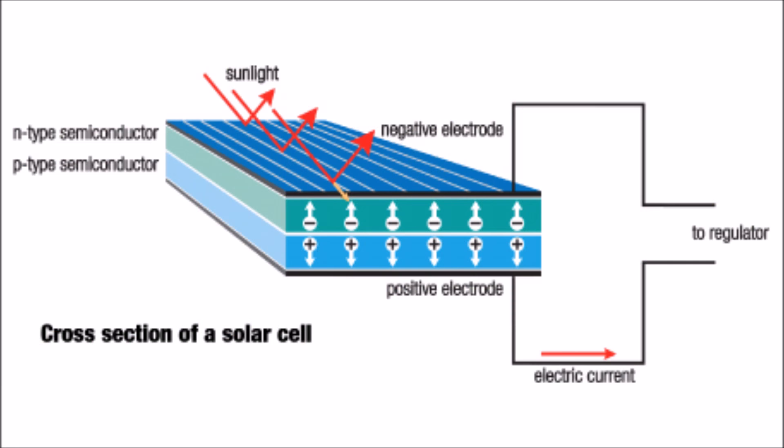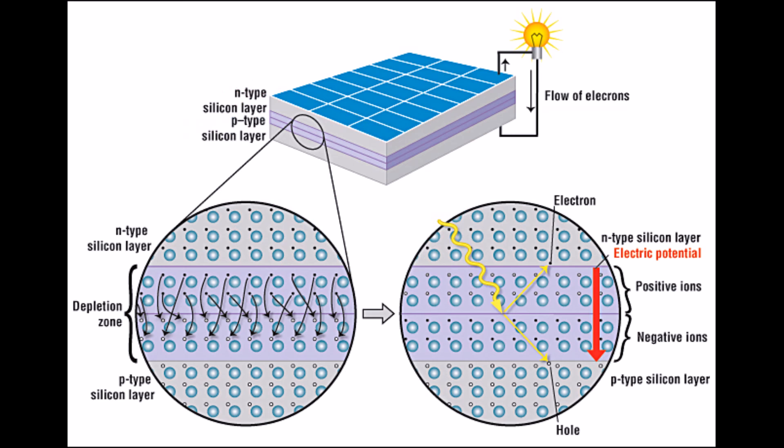Each cell is a sandwich of two slices of silicon called wafers. Each of the wafers in the sandwich is an opposite charge, which creates an electric field.